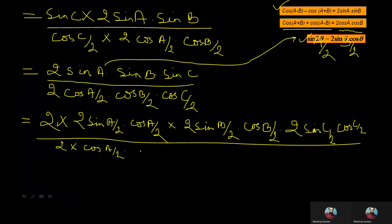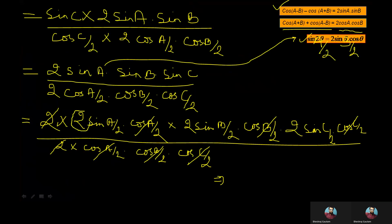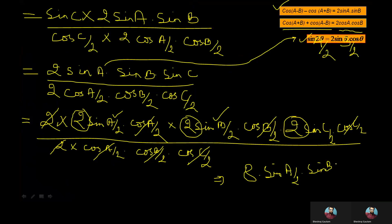Now cancelling the common terms from numerator and denominator: the 2s and cos(A/2), cos(B/2), cos(C/2) all cancel from both sides. Finally, it remains 2 times 2 times 2 which equals 8, and the remaining trigonometric ratios sin(A/2) sin(B/2) and sin(C/2), which is exactly the right-hand side of the equation. Hence we complete our solution.